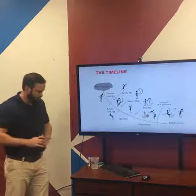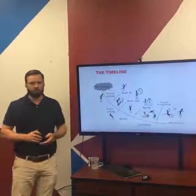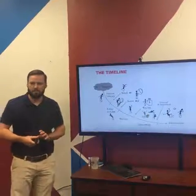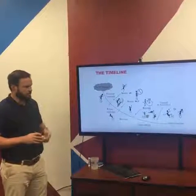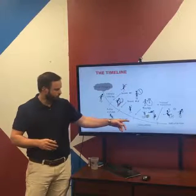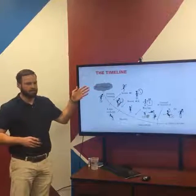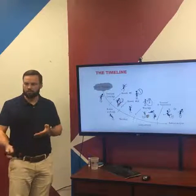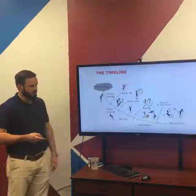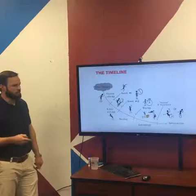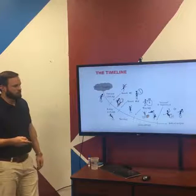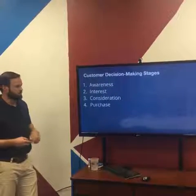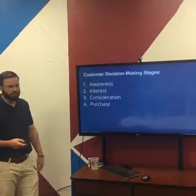Another tool from Jobs To Be Done is the timeline of how a customer gets from awareness to an actual purchasing decision. You're doing customer discovery and talking to customers who recently bought products similar to yours — you try to fill out this timeline. What were the preceding events that led them from a first thought to passively looking, to actively looking, to deciding, and eventually buying? You can figure out what their hangups were, what prevented them from moving through the sales process faster, and where they found out about the product. The customer decision-making stages are: awareness, interest, consideration, and purchase.